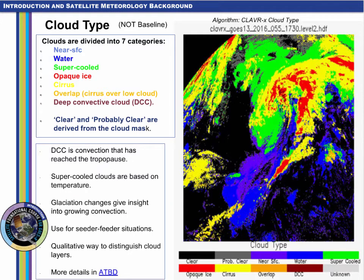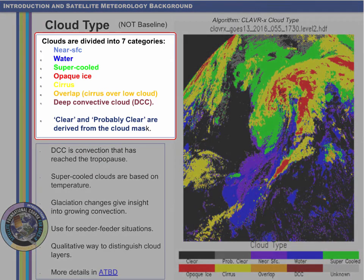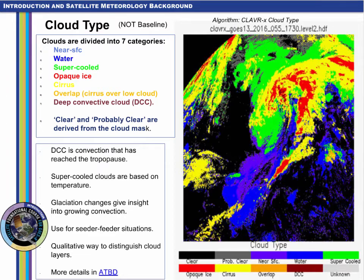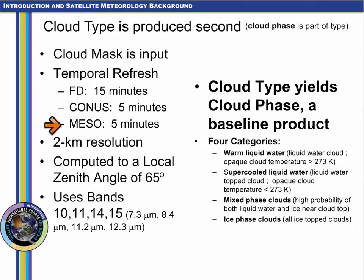Once cloud mask is computed, cloud type can be computed. Cloud type is a future capability product — it is not baseline, but it is used by other products. Cloud type is a way to identify cloud layers and cloud types. The baseline product associated with cloud type is cloud phase. Cloud type is produced every 15 minutes for the full disk domain and every 5 minutes for both CONUS and meso domains.